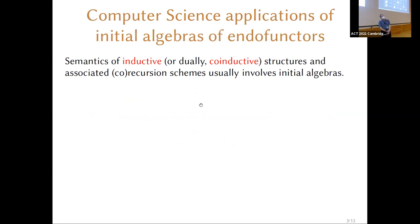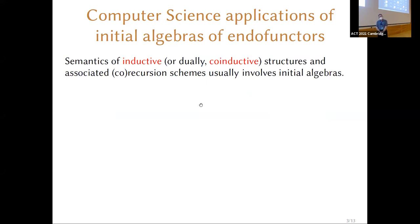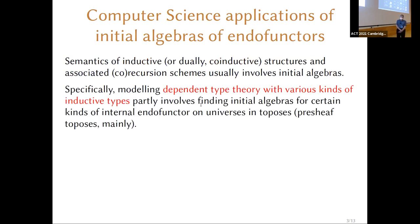Initial algebras of endo-functors are known to computer scientists because they crop up all over the place when you have various kinds of inductive structure, co-inductive structure, recursion schemes, and co-recursion schemes. Giving semantics for those things using category theory almost always involves choosing a suitable category C and a suitable endo-functor F, and constructing an initial algebra for that endo-functor to give a meaning to the inductive structure you're interested in.